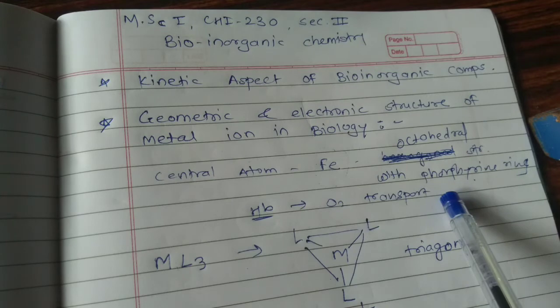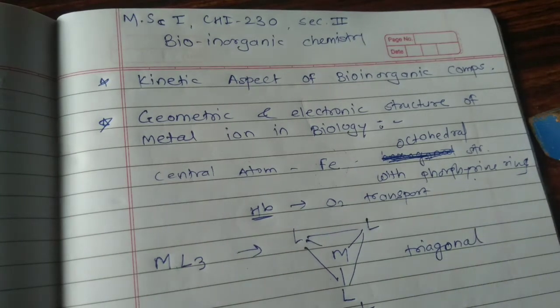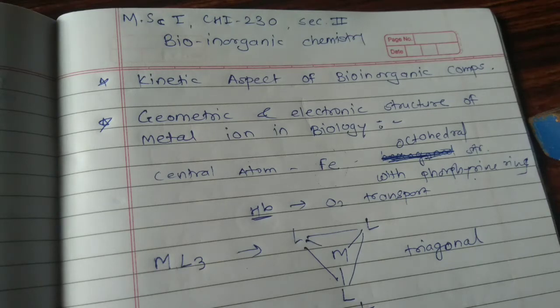Similarly, in chlorophyll, at the centre magnesium is present and that magnesium has a +2 oxidation state, and that is why it can perform its function.